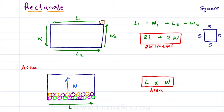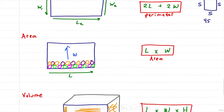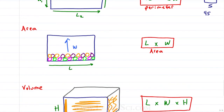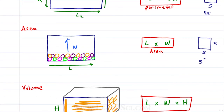So the perimeter would be 4S — or 4L, 4W, four of whatever that number is. For the area, if we had length times width for a rectangle and the length and width are the same for a square, then calling each side S, it's really just S times S, or S squared for area.